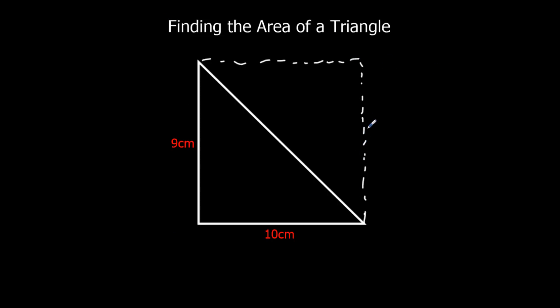If I had a rectangle here, 9 by 10, remember the area of a rectangle is length times width. So area of rectangle is the length times the width. If I wanted to work out the area of this whole shape, I'd do 9 times 10, which would be 90 cm squared.